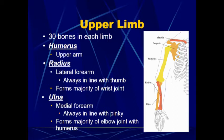The radius in the anatomical position is the lateral bone and is always in line with the thumb. The radius forms a majority of the wrist joint. The ulna is the medial bone, always in line with the pinky, and it forms the majority of the elbow joint. So if you ever see a diagram not in the anatomical position, you can always find the radius by finding the thumb and the ulna by finding the pinky.